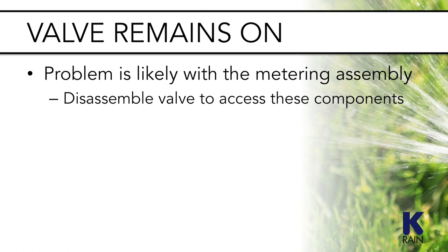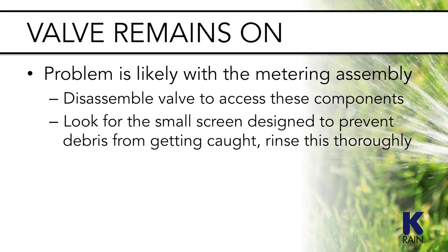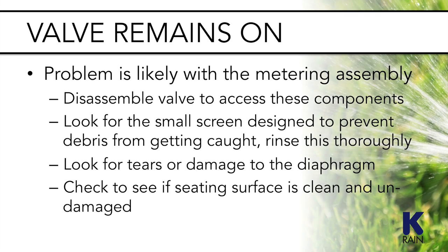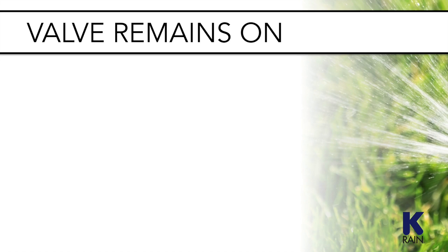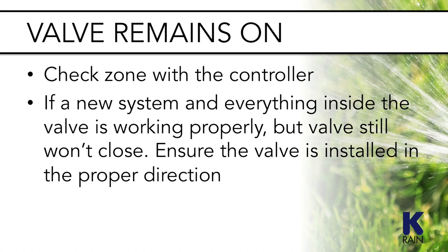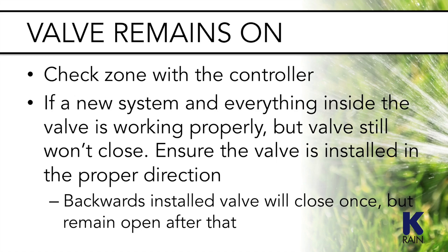If the solenoid plunger is moving and seated properly, the problem is likely with the metering assembly or the diaphragm. Disassemble the valve to access these components. You can find the metering assembly on the diaphragm by looking for the small screen designed to prevent debris from getting caught — rinse this thoroughly. Look for tears or other damage to the diaphragm that would prevent it from closing properly, and check that the seating surface is clean and undamaged. Once you have replaced any worn or damaged parts and reassembled the valve, check the zone with the controller to ensure it is working properly. Note: if this is a new system and everything inside the valve is working properly but the valve still won't close, make sure the valve is installed in the proper direction — a valve installed backwards will close once but afterwards remain open.